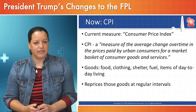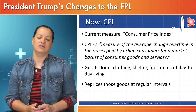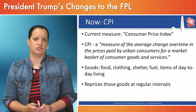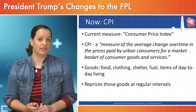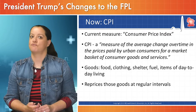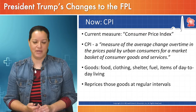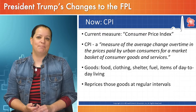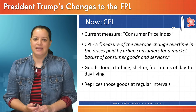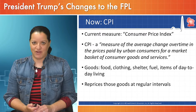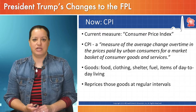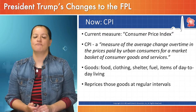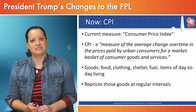Currently, it's the Consumer Price Index that is used as that cost of living and measure of inflation for determining the federal poverty level. It's been the Consumer Price Index for years — that's the standard measure. The Consumer Price Index is defined as a measure of the average change over time in the price paid by the urban consumer for a market basket of goods.